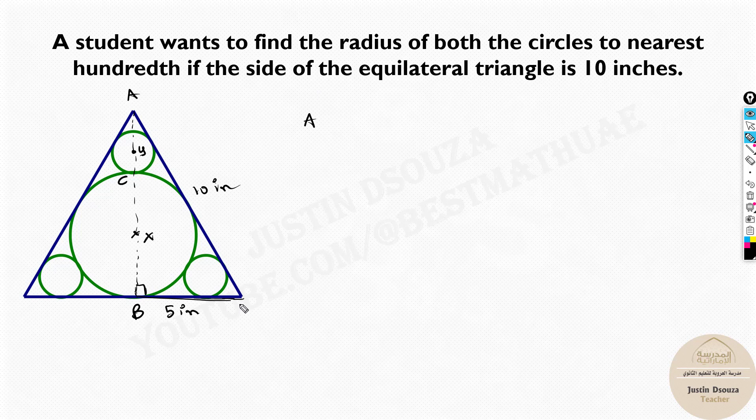If I consider this as M, AM squared, that is the hypotenuse, will be equal to AB squared plus BM squared. Now what is AM? AM is 10 squared, that will be equal to AB, that is unknown, plus BM is 5 squared. We can solve this up.